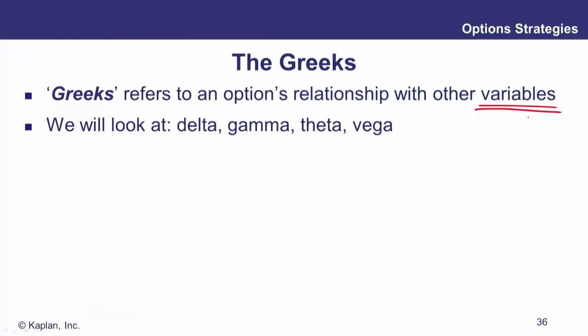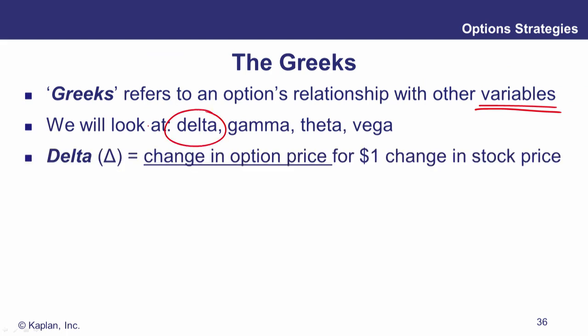The first Greek we'll look at is the delta of an option. Delta is the change in the option's premium or price for a dollar change in the underlying. This is the sensitivity of the option's value relative to the value of the underlying — the spot asset, or spot underlying asset.